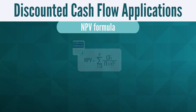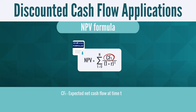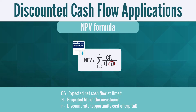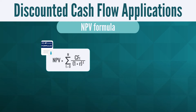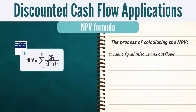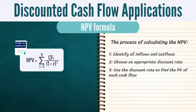Now let's put this into a formula. The term CFT is the expected net cash flow at time T. N is the projected life of the investment, and R is the discount rate, also known as the opportunity cost of capital. As you can see from the formula, calculating the NPV of an investment goes through a process which consists of four steps. First, we need to identify all inflows and outflows related to the investment. Then, we must choose an appropriate discount rate, which in turn is used to obtain the present value of each of the cash flows.